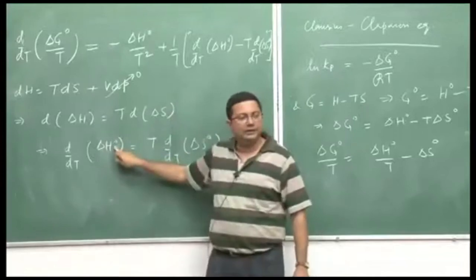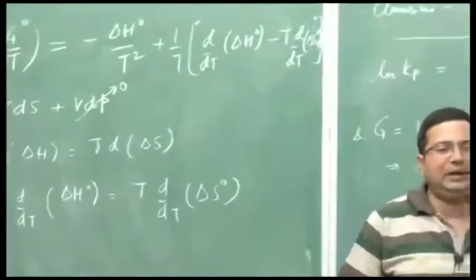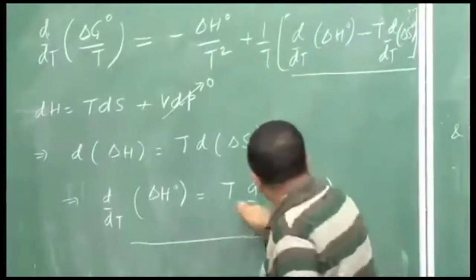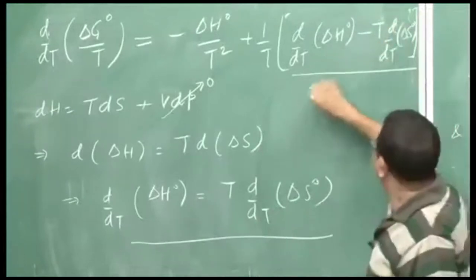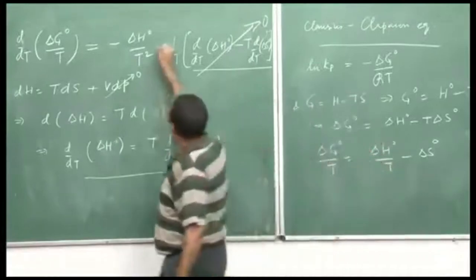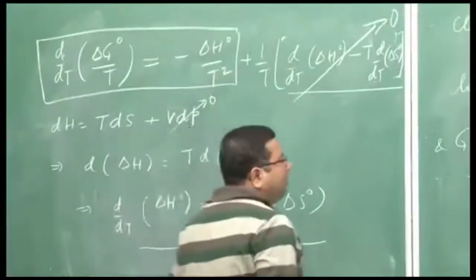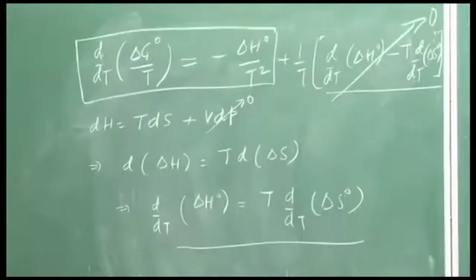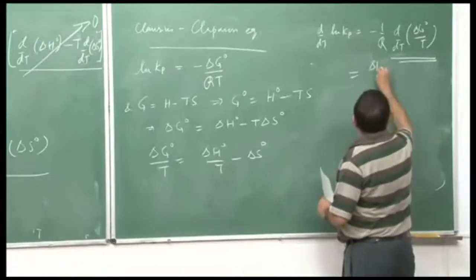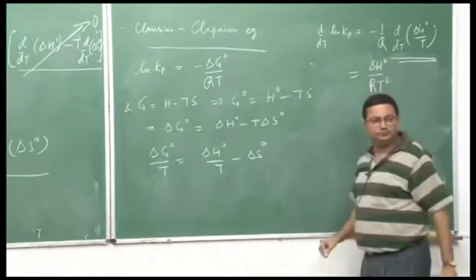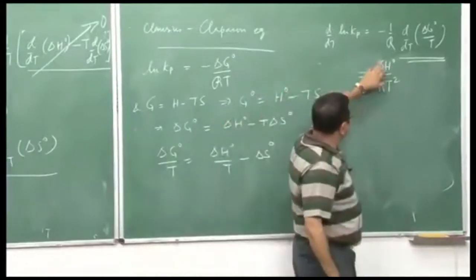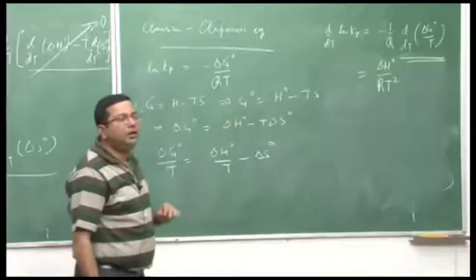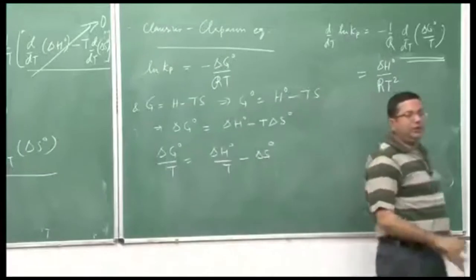Here we impose the condition that the process is at standard pressure. Looking at the expression for d(ΔG°/T)/dT, the terms involving d(ΔH°)/dT and T·d(ΔS°)/dT cancel each other, leaving only −ΔH°/T². Therefore d(ΔG°/T)/dT = −ΔH°/T², and substituting back we get d(ln Kp)/dT = ΔH° / (RT²). This is the Clausius-Clapeyron equation, which gives us Kp in terms of ΔH°, the universal gas constant, and temperature — all typically known properties.